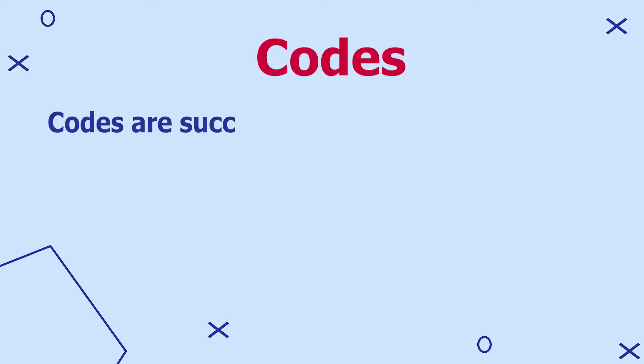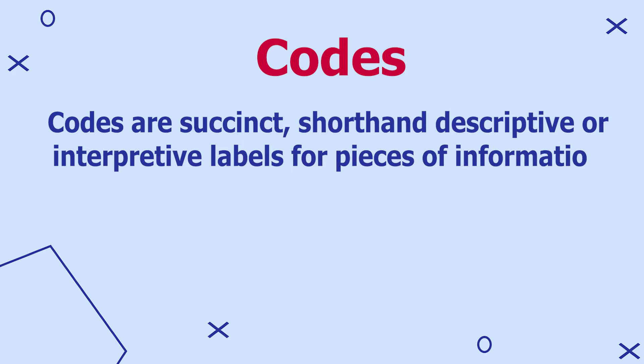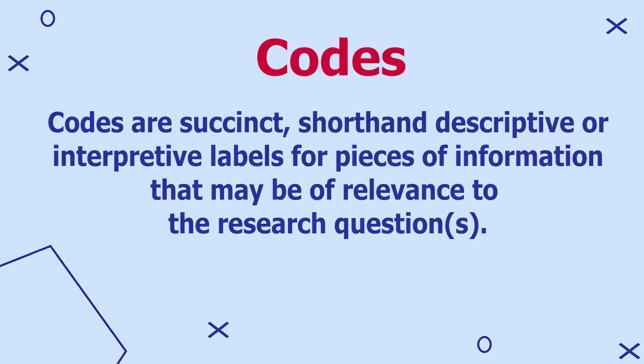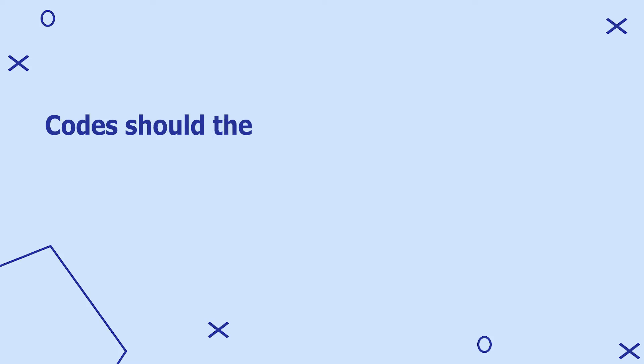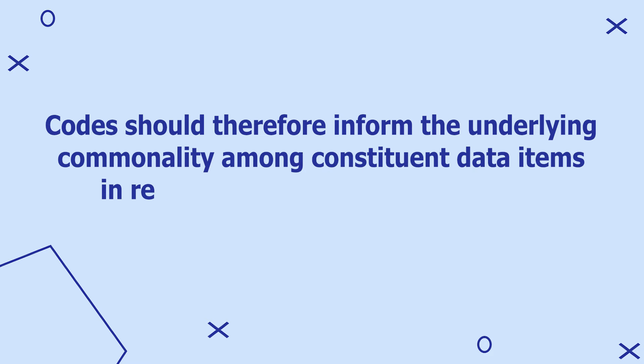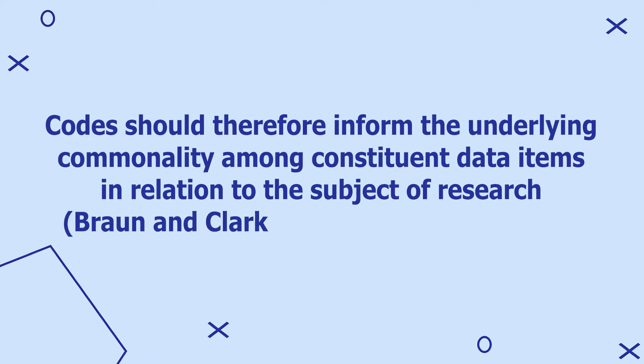The definition of codes is that codes are the fundamental building blocks of what will later become themes. Codes are succinct, shorthand descriptive or interpretive labels for pieces of information that may be of relevance to the research questions. Codes should be brief but offer sufficient detail to be able to stand alone, and should inform the underlying commonality among the constituent data items in relation to the subject of research. A researcher should work systematically through the entire dataset, attending to each data item with equal consideration to come up with codes.